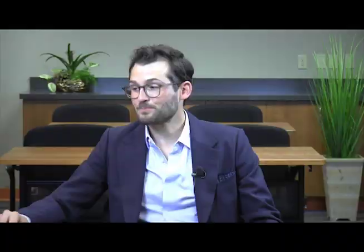Fast-forwarding to section 32, seller's representations and warranties. There are four new representations. Subsection b adds that seller represents the books and records are true, accurate, and complete 'to the best of seller's knowledge' — so the seller isn't making a blanket guarantee, just representing to the best of their knowledge, which apportions risk fairly between the parties.